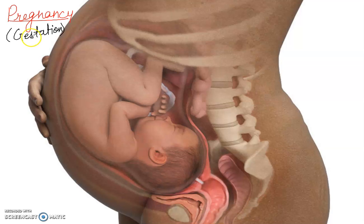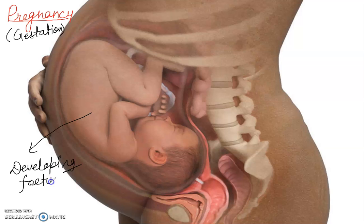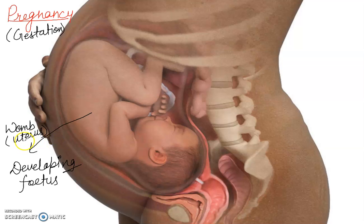This is the condition of carrying a developing fetus. You can see here this is a developing fetus inside the female uterus, which is also known as the womb. When there is formation of a zygote, then after the zygotic structure formation there will be formation of an embryo, and that will implant in the uterus and develop up to nine months. This developing embryo, which is called a fetus, looks like a baby.